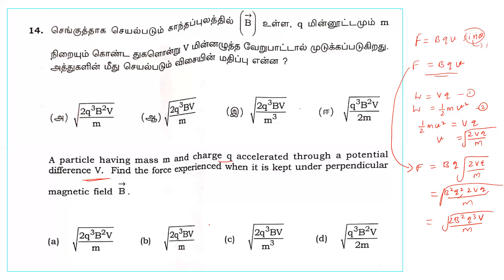So the force F equals q times B times the square root of (2qV/m). The correct option involves B squared, q cubed, V, and m in appropriate combination, giving the answer as B times q times root of (2qV/m).